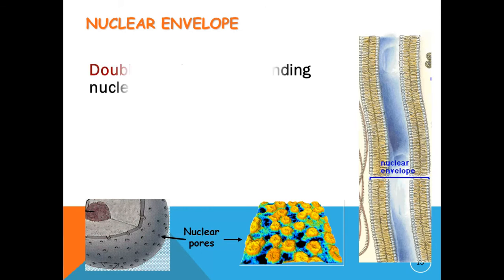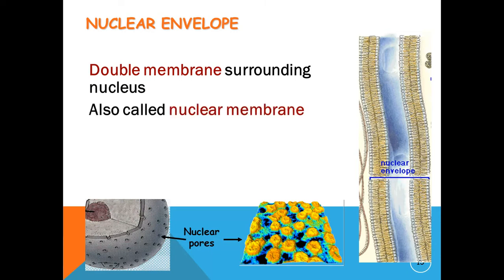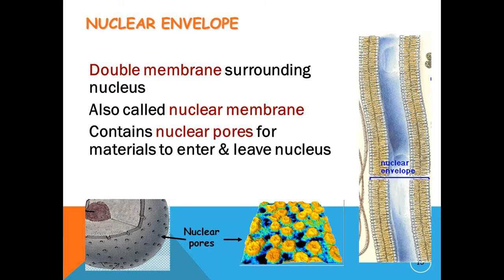The nuclear envelope, also known as the nuclear membrane, is made up of two lipid bilayer membranes which in eukaryotic cells surrounds the nucleus which encases the genetic material of the cell. The nuclear envelope consists of two lipid bilayer membranes: an inner nuclear membrane and an outer nuclear membrane. It has nuclear pores for materials to enter and leave the nucleus.